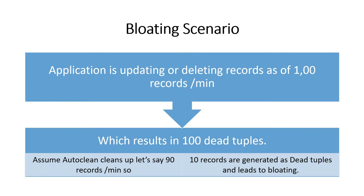Let us see a bloating scenario - how it actually happens. Our application is trying to update or delete the records in the database. Let's say in a particular table there are about hundreds of records updated or deleted per minute. Due to the behavior of PostgreSQL, when 100 records are updated, it results in two actions: 100 new records are generated as a result of the update, and exactly 100 records are accumulated as dead tuples which hold the previous value.